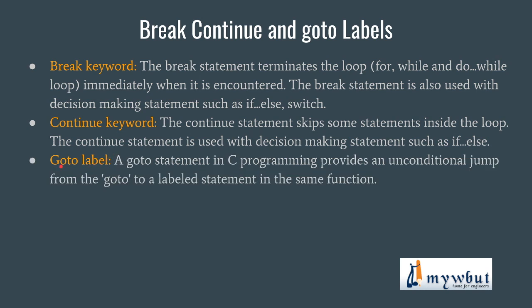The next one is the goto label. Goto is actually an unconditional jump — you can specify a goto along with a label, and anywhere in the program, whenever that particular label is encountered, your program control will shift directly to that point. But the use of goto label is highly discouraged by good programmers. The reason is that goto keeps no direction — once you use a goto label, the flow of the program is completely disturbed. It becomes very unclear where the program will jump from which point, and when a reader tries to read your code, they can get highly confused.